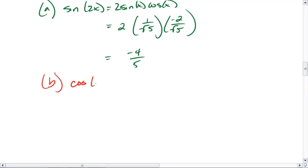For cosine of 2x, we can use any one of our three equations. I'm going to go ahead and use 2 cosine squared theta minus 1. It really doesn't matter which one you use, it's up to you. Actually, I'll use the first one. We'll use cosine squared x minus sine squared x.